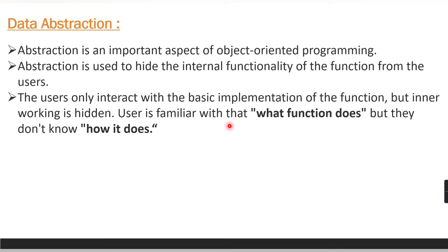Consider it this way: when we have a function, it takes some arguments. The user knows what arguments to provide and what the expected output will be, but the user is not aware of how the function is performing the actions depending on those arguments.